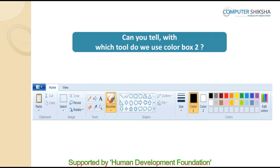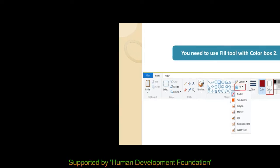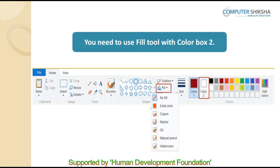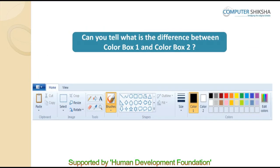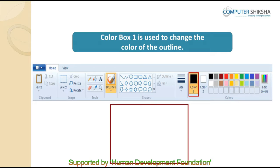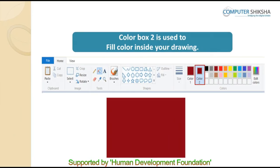Can you tell with which tool do we use color box 2? In any drawing, to color, you need to use fill tool with color box 2. Can you tell what is the difference between color box 1 and color box 2? Color box 1 is used to change the color of the outline, while color box 2 is used to fill color inside your drawing.